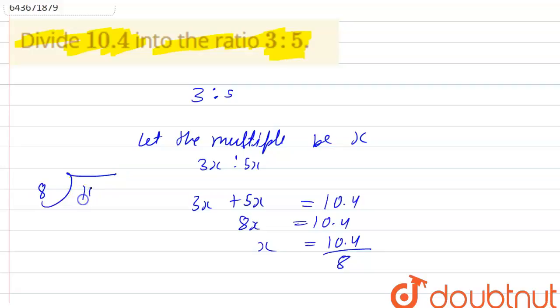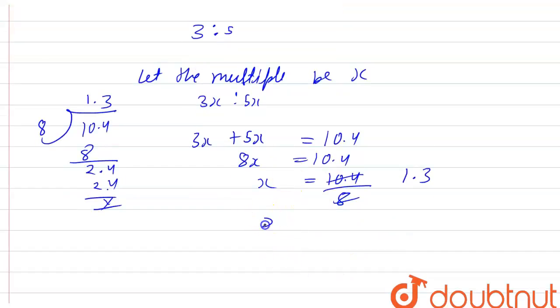Let's divide this. 8 divided into 10.4. 8 into 8 is 1, remainder is 2.4. If I put a point here, then it will become 24. Then 8 into 24 is 3. This is canceling out. So our answer will be value of x is 1.3.